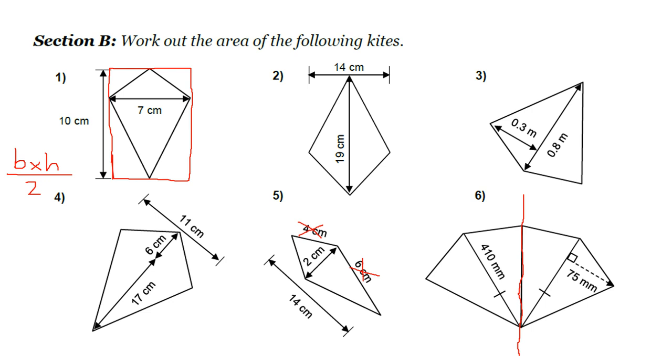And the dimensions of the kite going downways is this 410 going downways. And the across ways, well, it tells me halfway across the kite is 75. So all the way across must be another 75. So all the way across must be 150. So the dimensions of this kite here is 150 by 410, halved obviously. But then you've got another one over here with the exact same dimensions, 150 by 410.